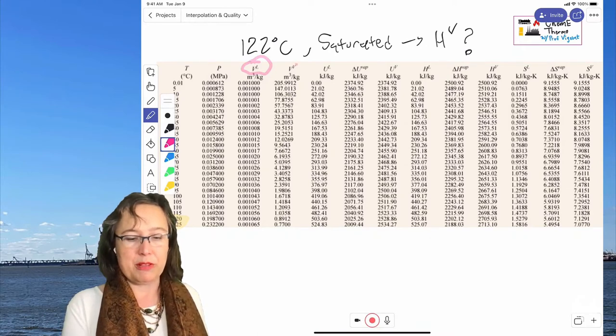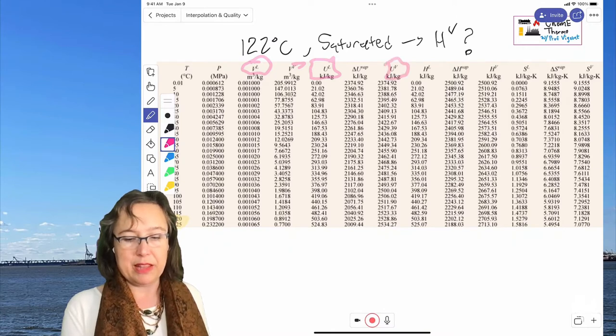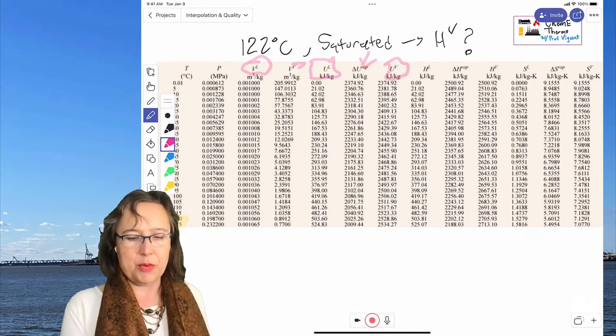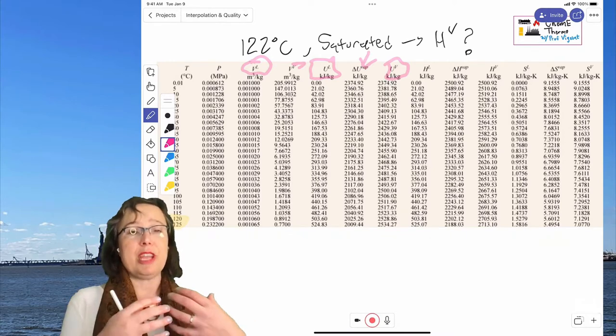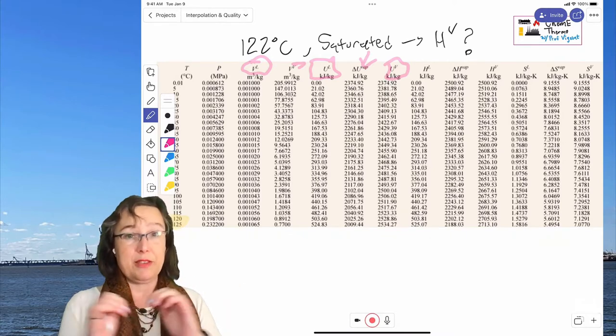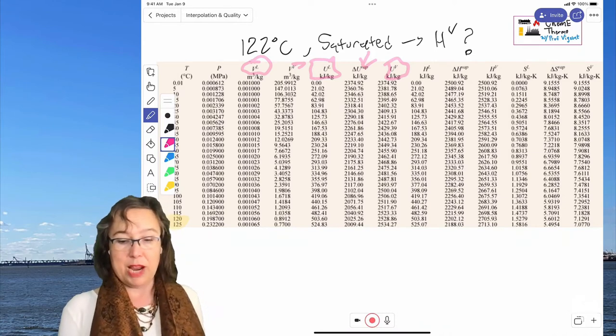So we have that for both the liquid and then the vapor, and we have internal energy for the liquid and then the vapor, and then there's this value in the middle, and that's the difference between them. That's the amount of energy, internal energy, you must put in to have it change phase. So we don't need any of that right now.